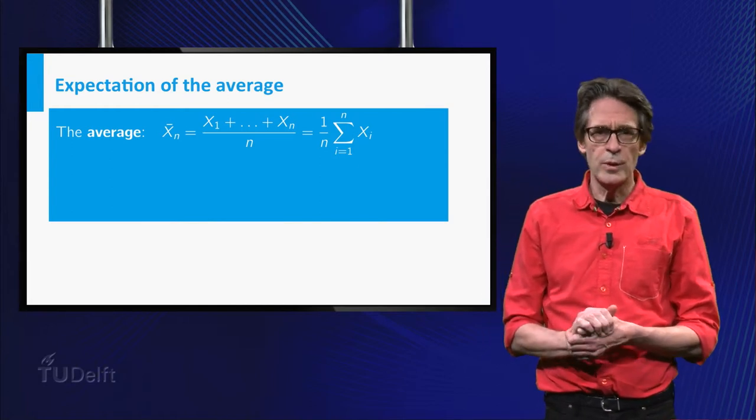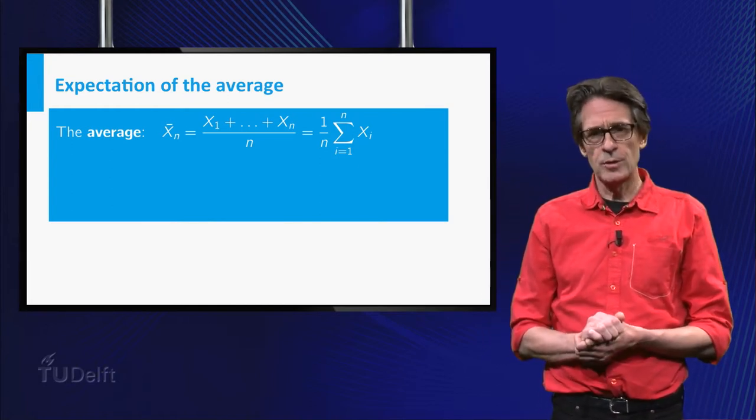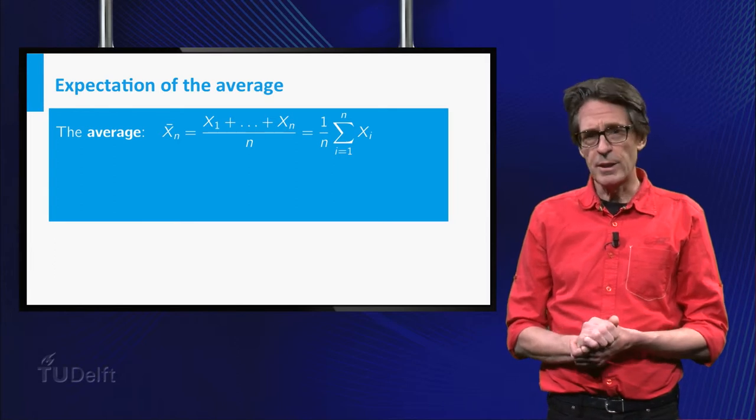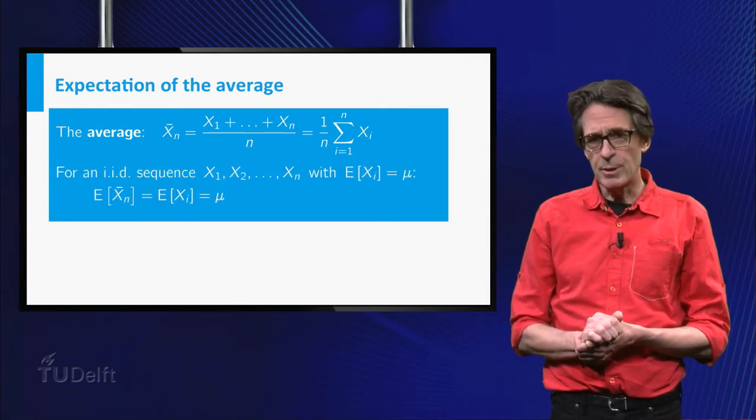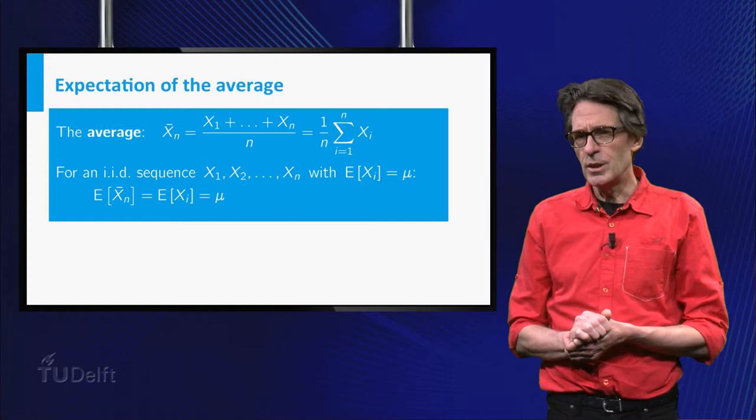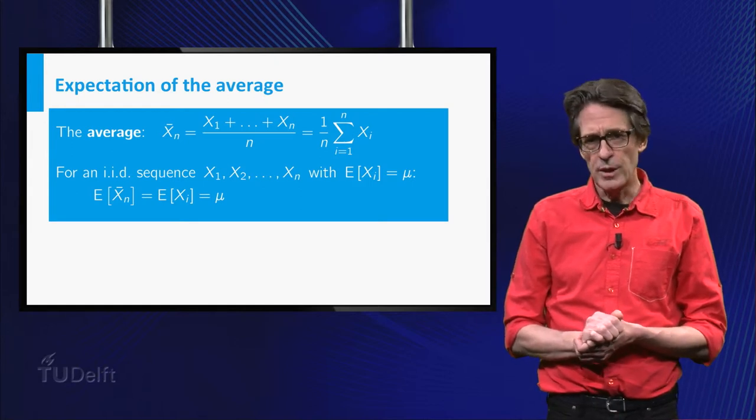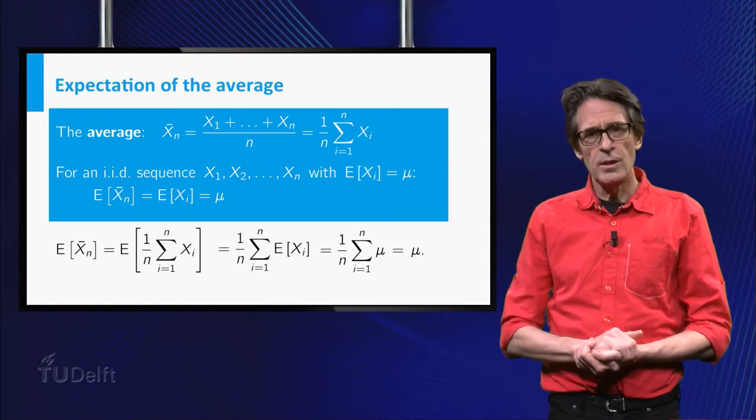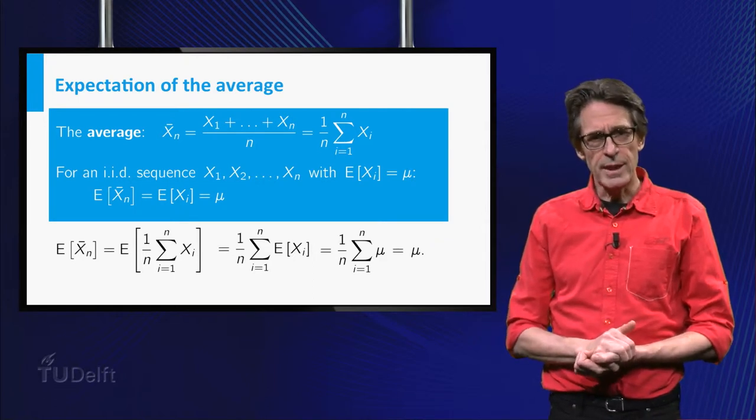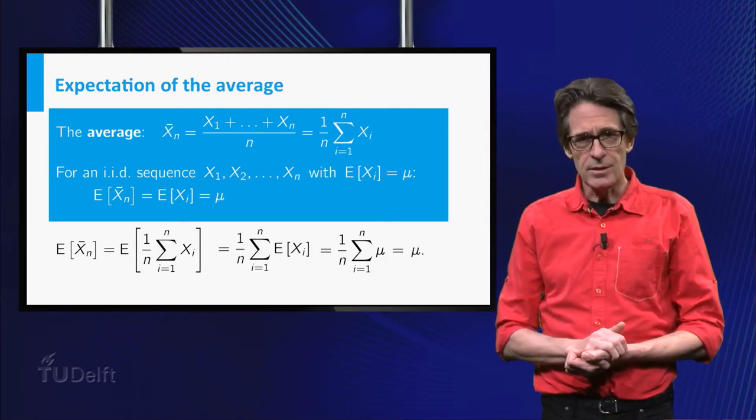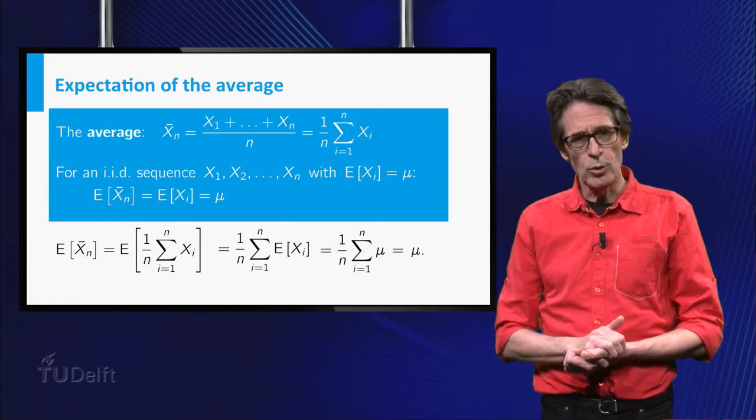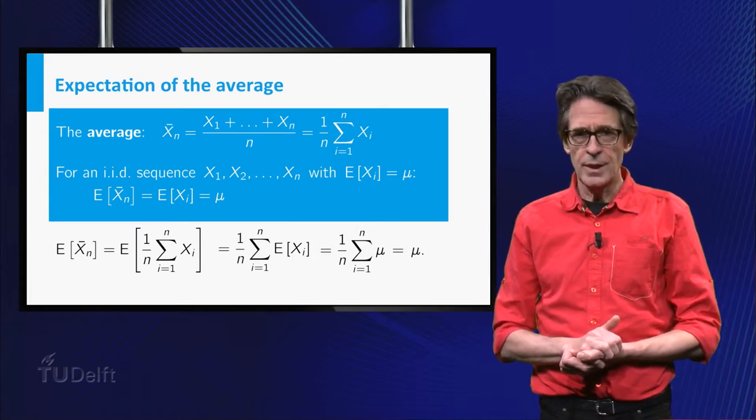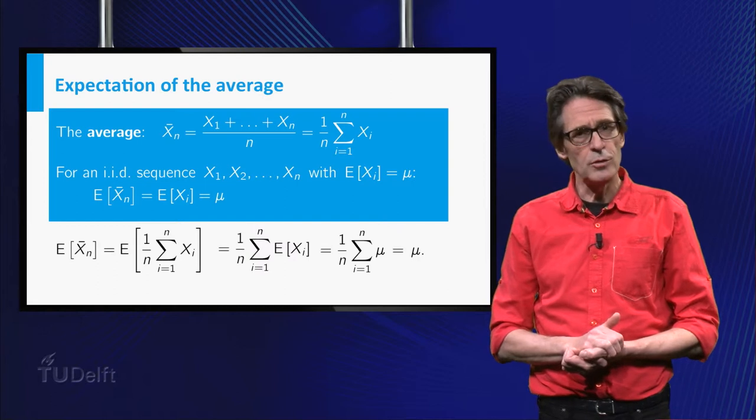Well, why would we consider the average of measurements? First, look at its expectation. The expectation of the average is equal to the expectation of the individual xᵢ. This follows easily from the rules of the expectation. At the second equality sign, the sum rule for the expectation is used. This rule holds even in the case of dependent variables.